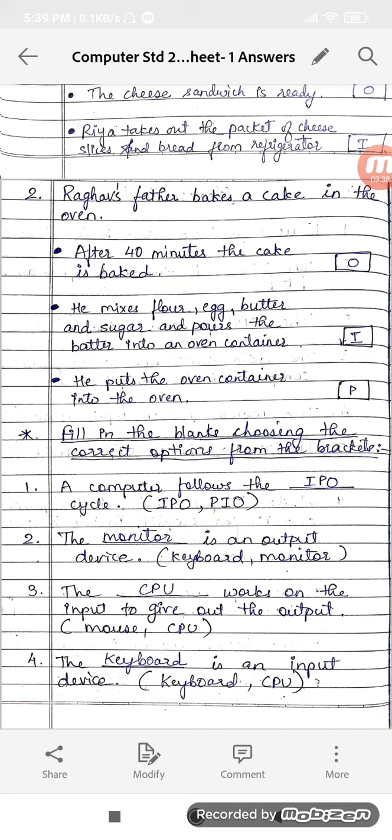Next, the keyboard is an input device, right? CPU? Why? Because CPU it processes, so the keyboard will be your input device. I hope you all have written correct answers. Just check the answers and correct it if by mistake you have written the wrong answer.